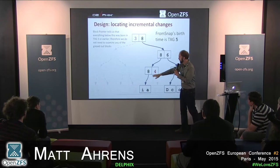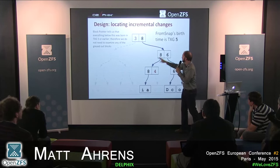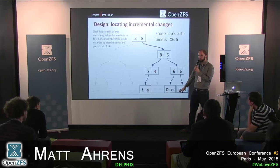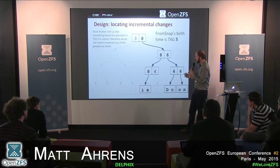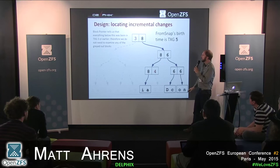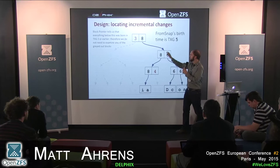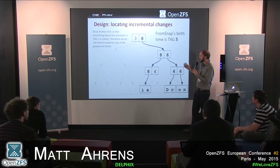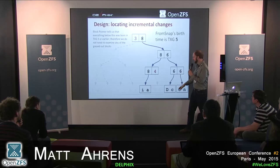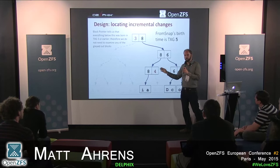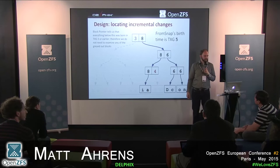In the end, we find that some blocks were modified after time 5 and some were not — we send just those changed data blocks. In this simplified example, we had to read four metadata blocks to get there. In reality, there are actually around 100 pointers per indirect block rather than just two, so the efficiency gains are much greater.